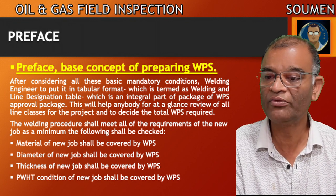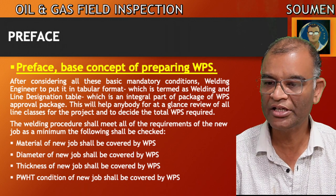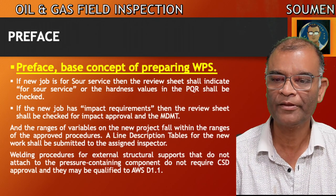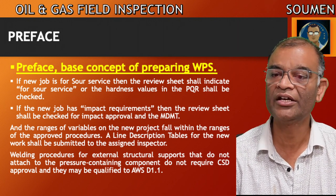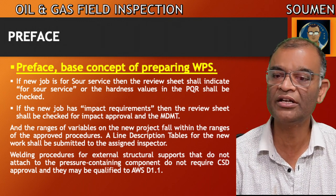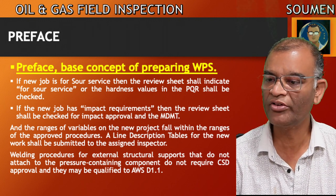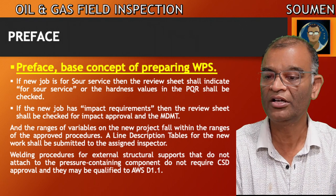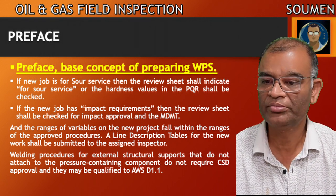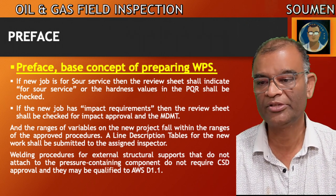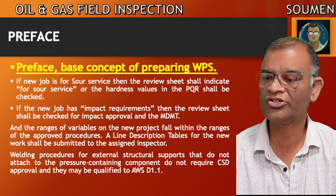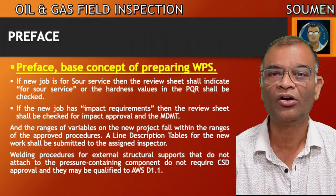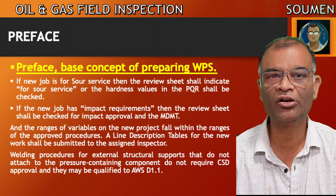The following shall be checked: material for the new job shall be covered by the WPS; diameter and thickness; PWHT conditions — post-weld heat treatment conditions of the new job shall be covered by the WPS. If the new job is sour service, the review sheet shall indicate sour service or the hardness values in the PQR shall be checked. If the new job has an impact test requirement, the review sheet shall be checked for impact approval and the MDMT. The ranges of variables on the new project must fall within the ranges of the approved procedure. Welding procedures for external structural support that do not attach to the pressure-containing weldment do not require CSD approval because they are already pre-qualified in the structural welding standard AWS D1.1.